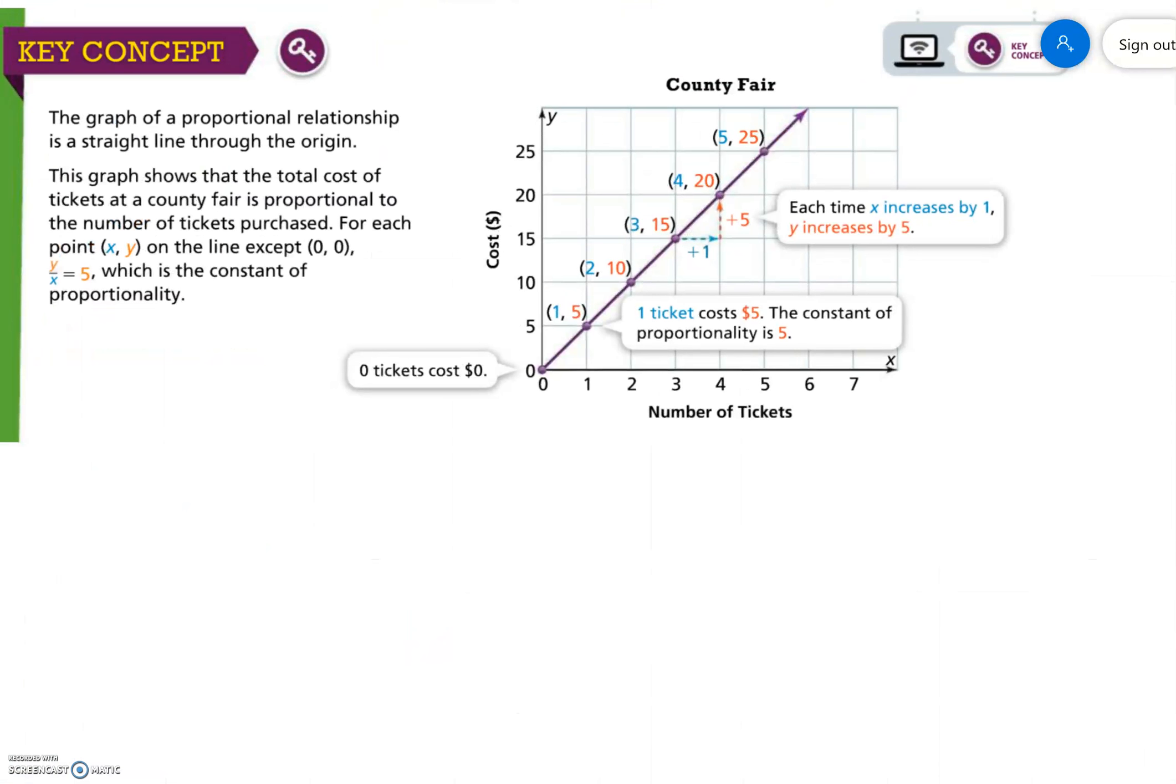Okay, on the next page, key concept. The graph of a proportional relationship is a straight line through the origin, so it must have both of those things. This graph shows that the total cost of tickets at a county fair is proportional to the number of tickets purchased.